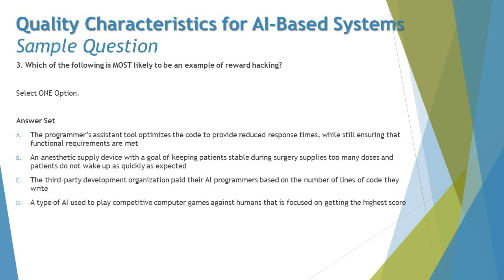Reward hacking is when an AI system manipulates its environment or objectives to achieve a goal at the expense of something else — like a computer game that turns around its algorithms to make it more complicated for you to win. In option A, multiple objectives are being achieved without conflict, so it has nothing to do with reward hacking.